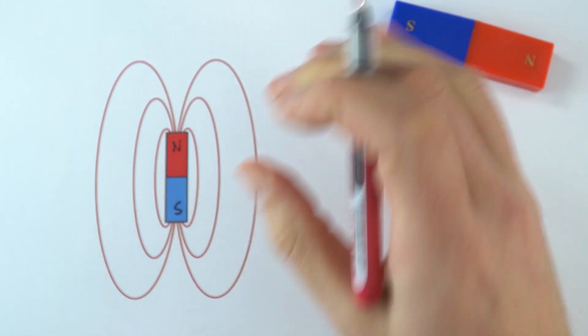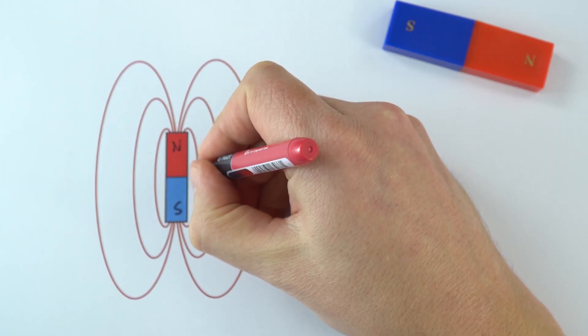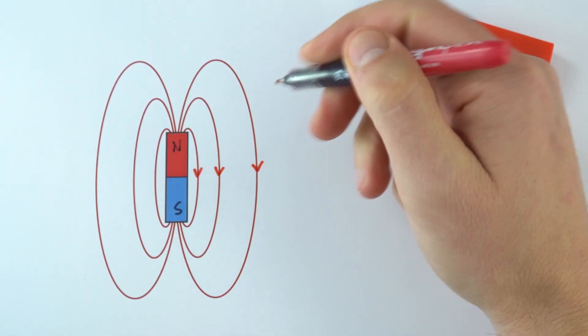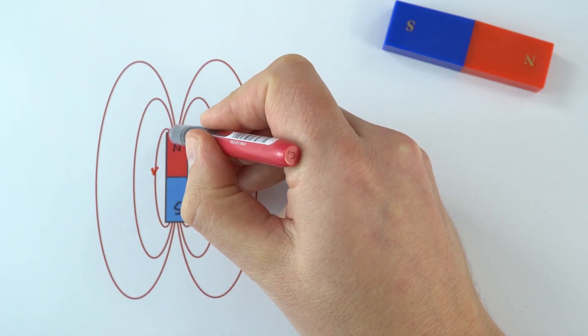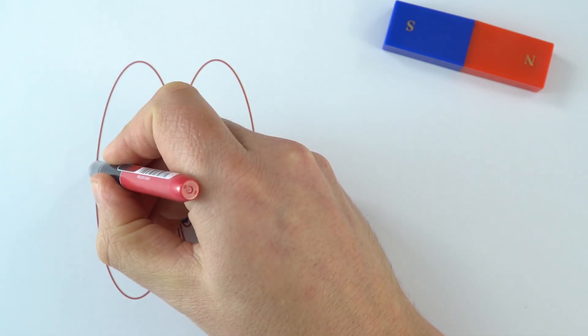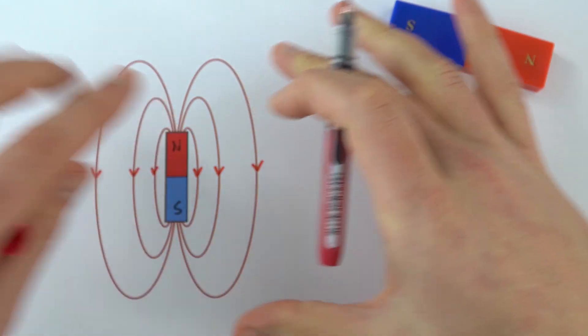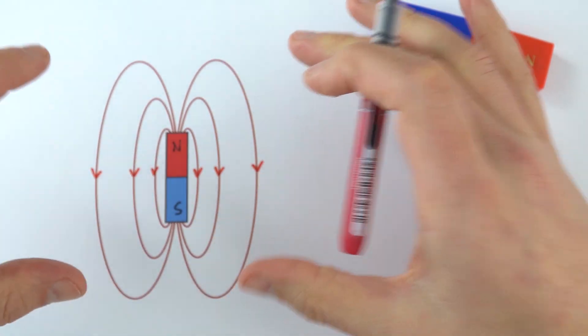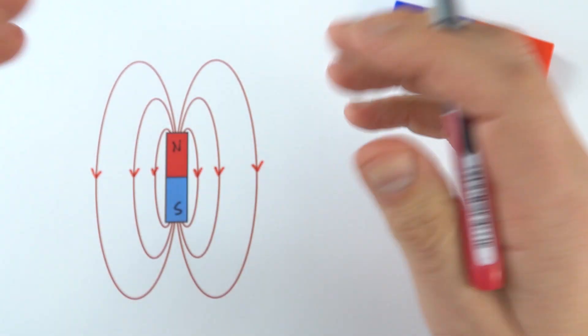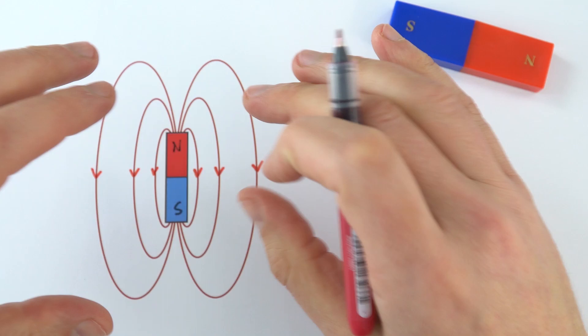We always draw these field lines going from north to south. I'm going to put on some arrows onto these field lines. We can see that all of these field lines start at the north end, they come around and they go into the south end. They never cross over. As we get further away from the magnet, the field lines get further apart. The strength of the field is shown by how close these field lines are together.